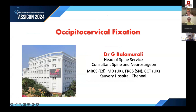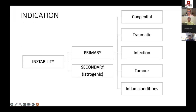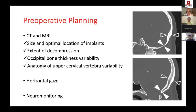Occipitocervical fixation technique is all about understanding anatomy. The primary indications are instability — either primary or secondary. Secondary instability is usually due to decompression of the foramen magnum and C1, sometimes causing kyphosis. Most pathology is primary: congenital, traumatic, infection, or inflammatory conditions like rheumatoid arthritis. Pre-operative planning is very important — CT with angiogram and MRI scan — to determine implant size, location, extent of decompression, and vertebral artery anomalies around C1-C2.